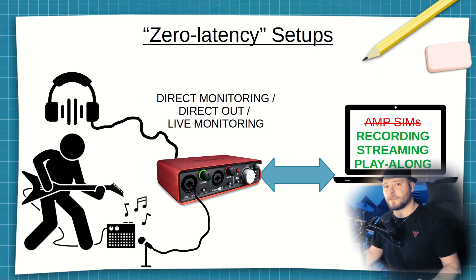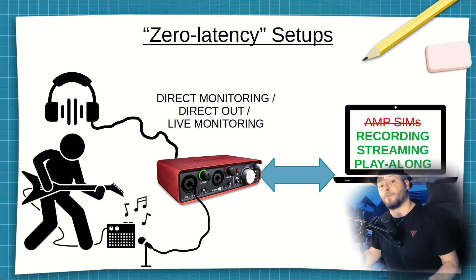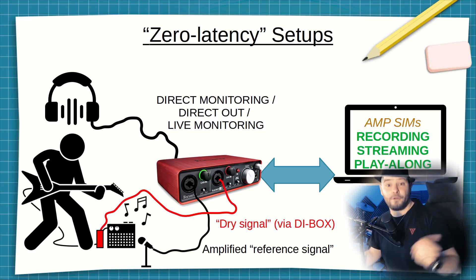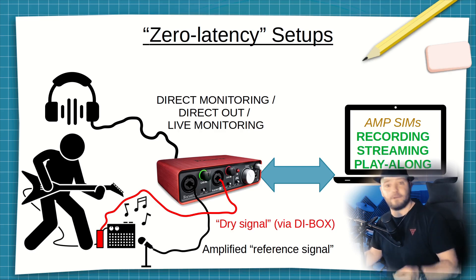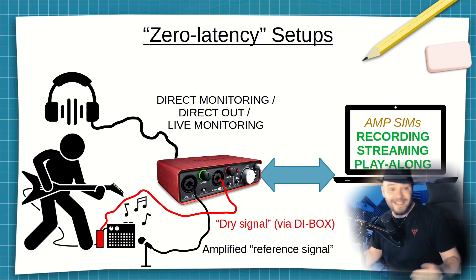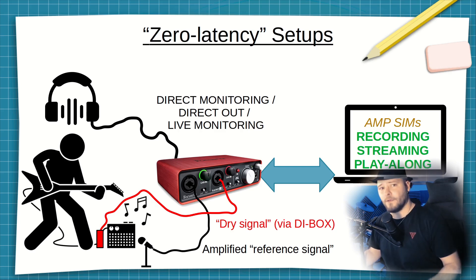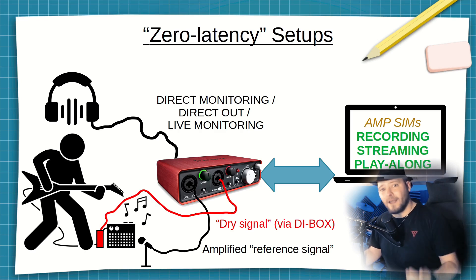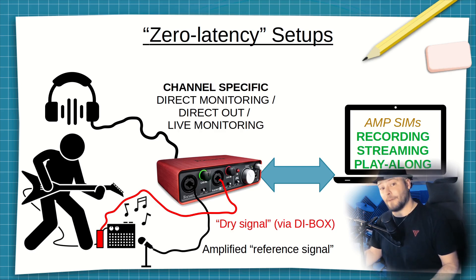With that setup you can't really use amp sims because you're already recording signal from your amplifier. If you want to play with those, one option is to get a DI box and an audio interface with two inputs. The DI box splits your guitar signal so you can feed it to your amp and also to the audio interface as a dry signal. In your computer you can then record the dry signal and apply an amp sim to it later. You don't hear the amp sim while playing, but you will hear it when playing along with tracks. In this setup you might be hearing both the amplified signal and the dry signal unless your interface has channel-specific direct monitoring.